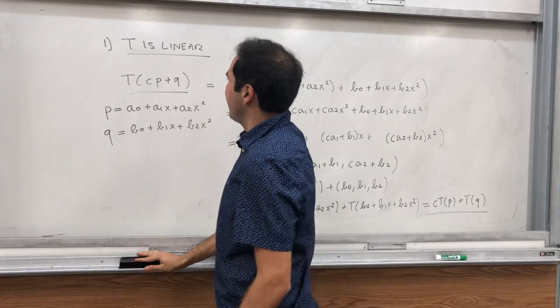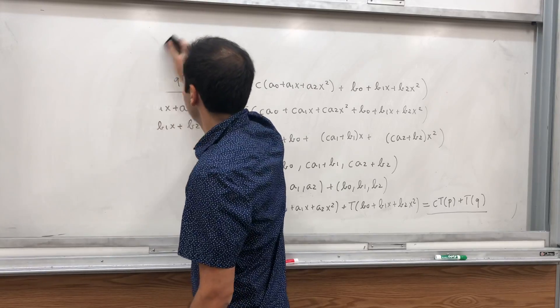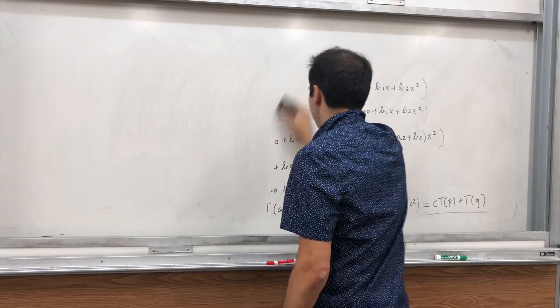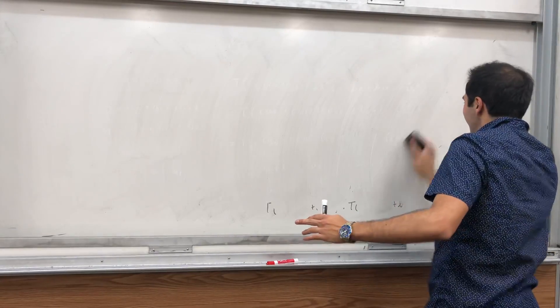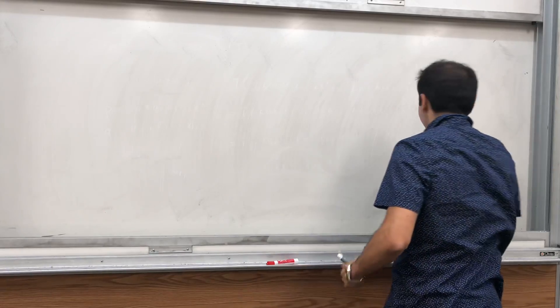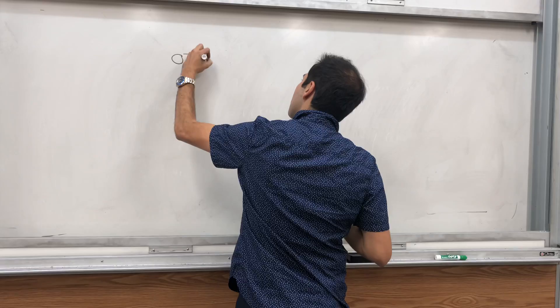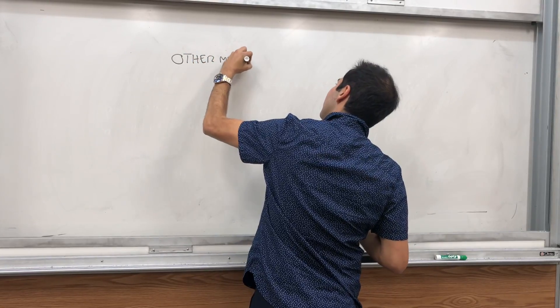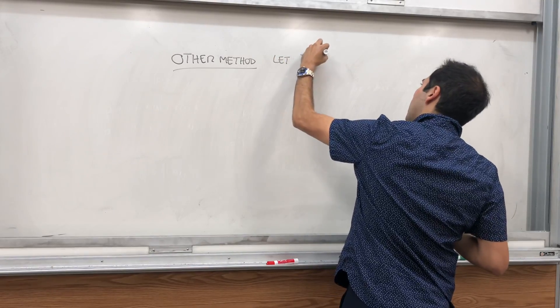So technically, to show something is isomorphic, it's enough to find an inverse. Again, this is the method I would like to see on exams, but if you want to be sneaky, there are other ways to do this. So, other method. Let T inverse go from the output space to the input space.